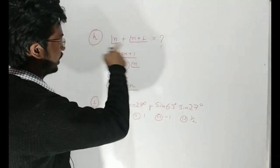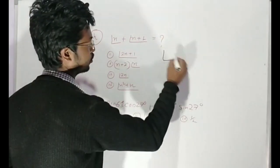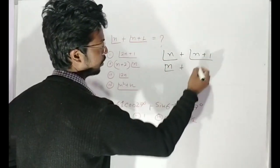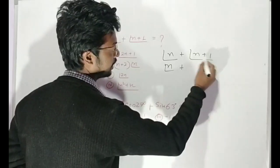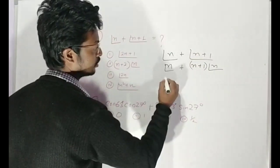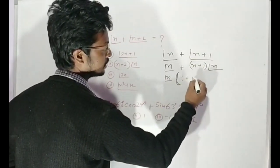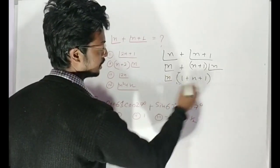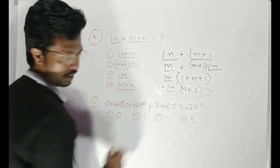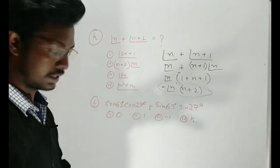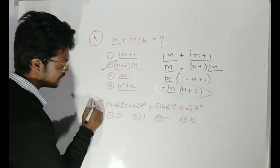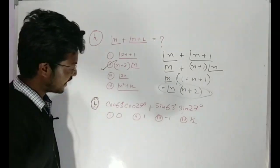Question number H: the concept of this question is the factorial. If the factorial n has 1 plus n plus one, and 1 plus n plus one, that is what factorial has. The answer is n plus 2. The question is M.C. — cos 63, cos 27.